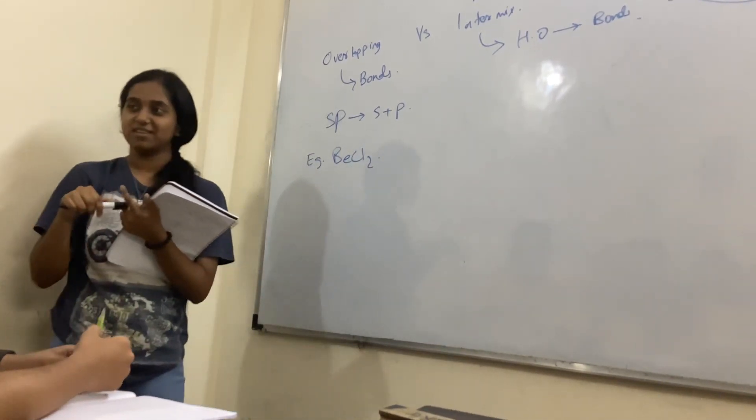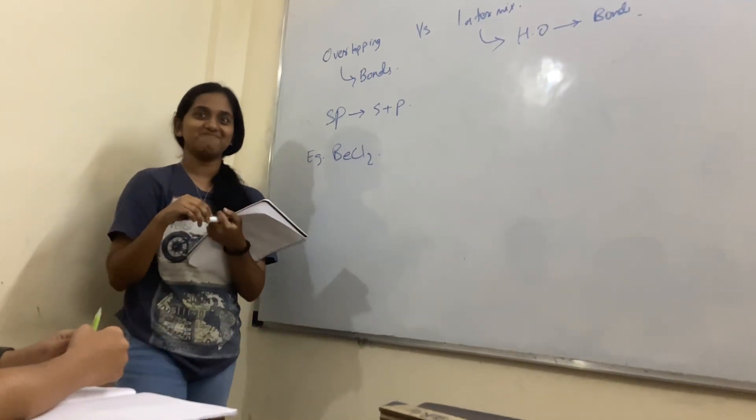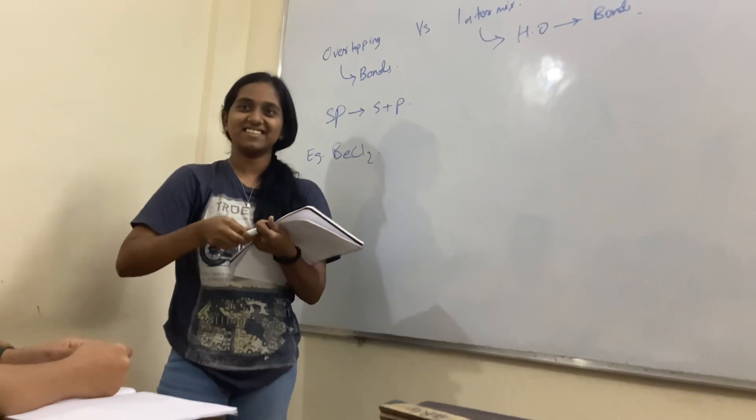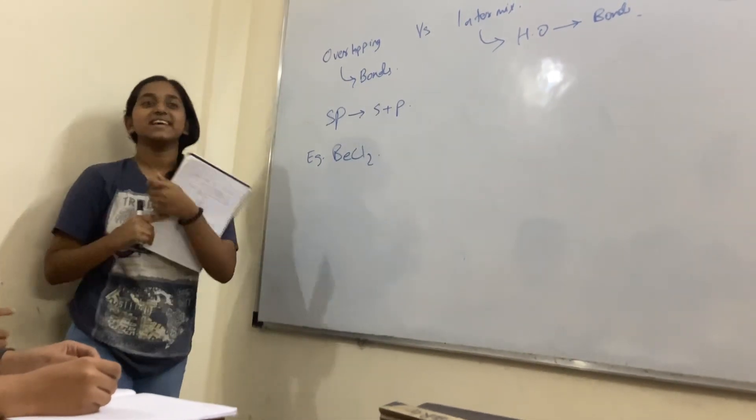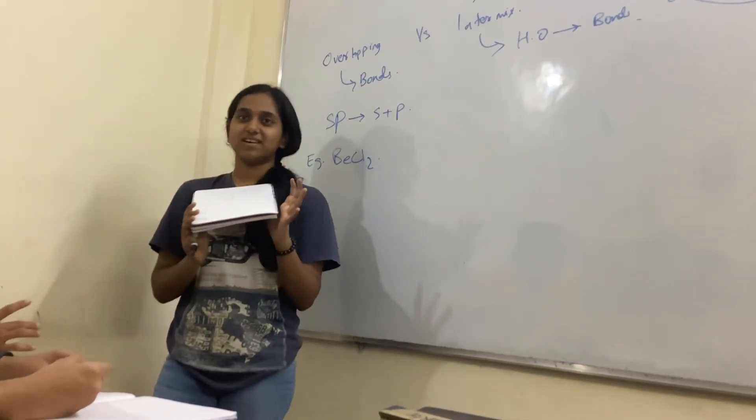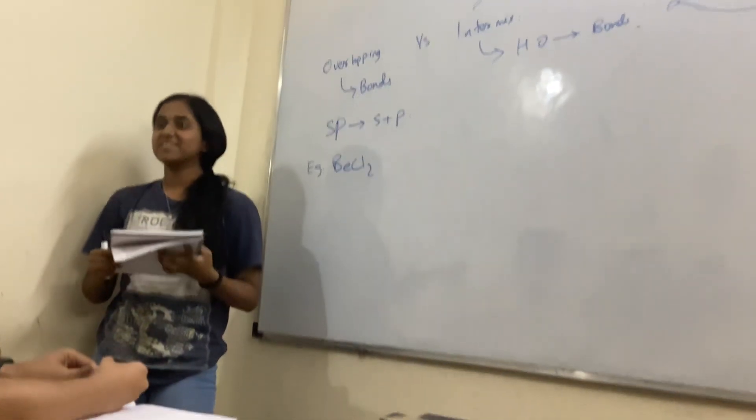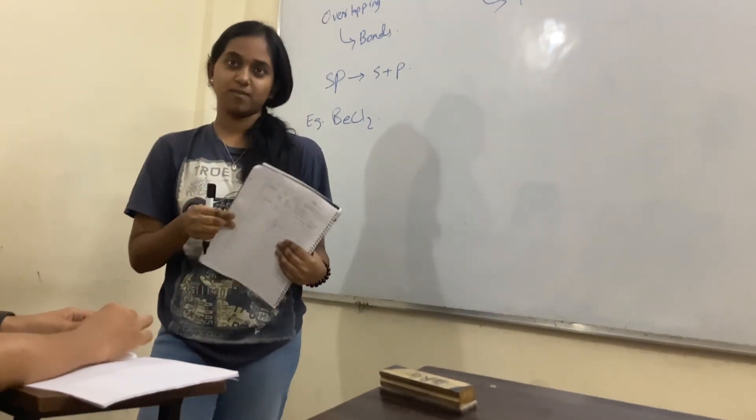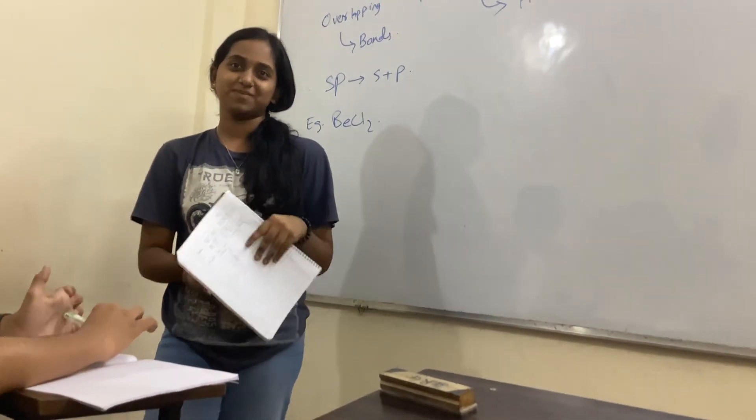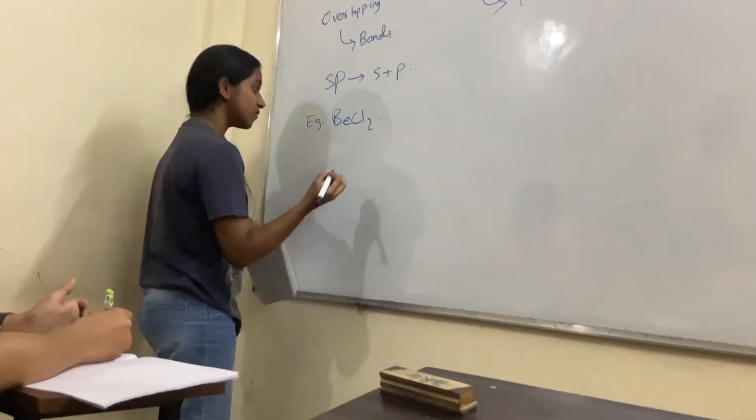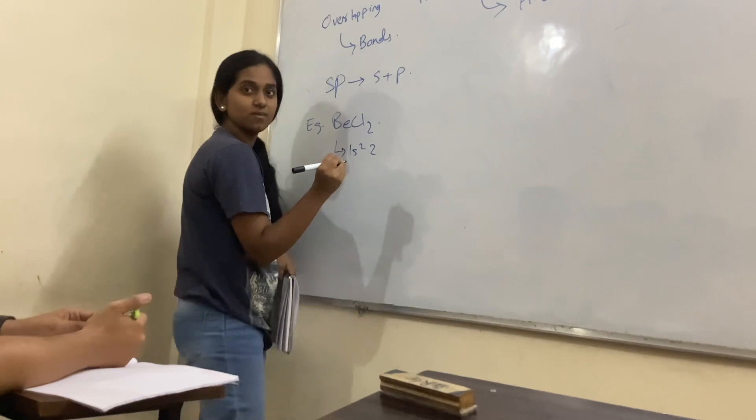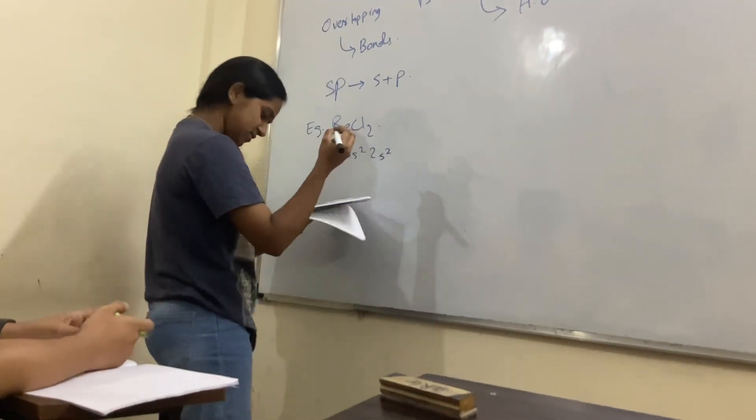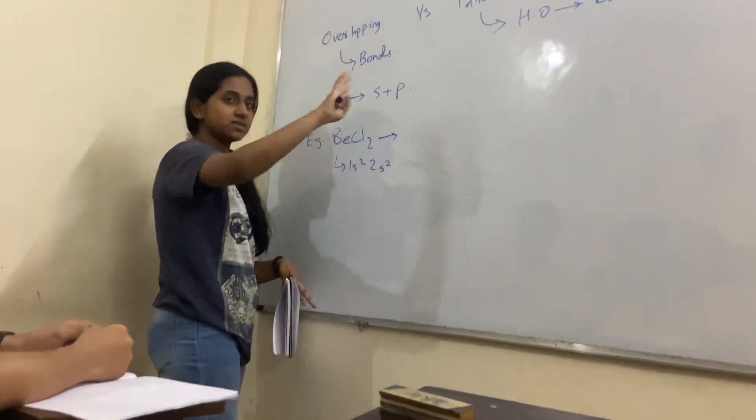The electronic configuration is 1s2 2s2 2p1. Start writing it: 1s2, 2s2, 2p1. What are all the classical orbitals?